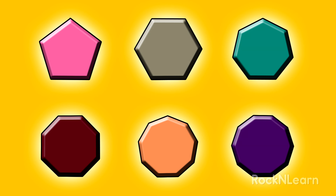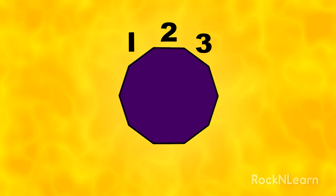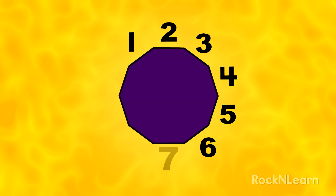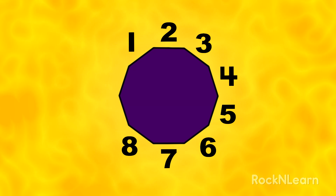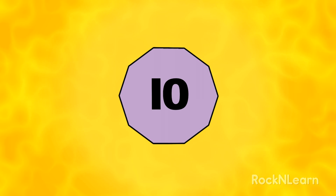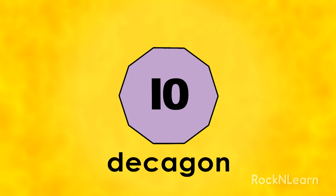Point to the violet shape. Let's count the sides. One, two, three, four, five, six, seven, eight, nine, ten! A shape with ten sides is called a decagon. Decagon!